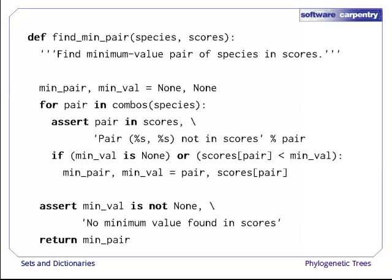Let's start writing the functions our overall algorithm assumes. The first is min_pair, which finds the closest pair of organisms in the scores table. The algorithm is simple, but it assumes we have a way to generate all valid combinations of organisms from the species list. We'll need to write that. It's also worth noting the assert statements, which check that the data we're working with is sensible and that we actually found a minimum value. Remember, good programs fail early and fail often.